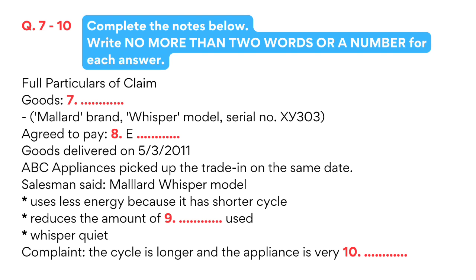Now, think carefully about this next question. What did the respondents say about the quality of the goods, or the way they would perform? The salesman said, 'The Mallard Whisper model has a much shorter cycle, so it uses less power.' And he added, 'It will also use less water.' Is that true? Well, partly. It does seem to use less water, but both the wash cycle and the rinse cycle go on for much longer than my old machine, so I don't see how it can use less electricity. But the sales assistant also said, 'This model is whisper quiet.' And is it? No, not at all. It's so noisy we can't hear the television in the next room.